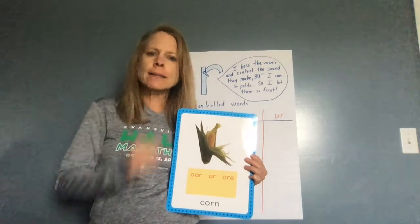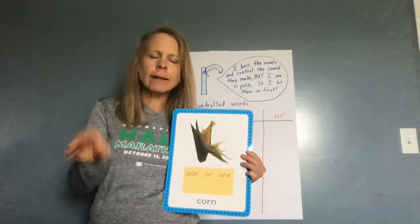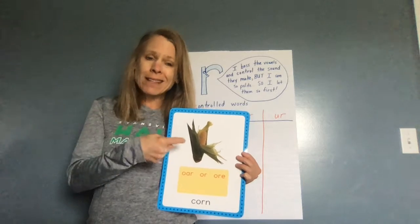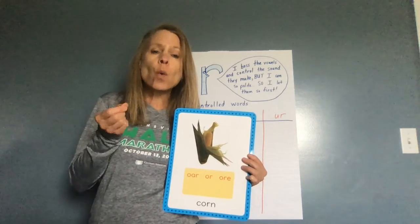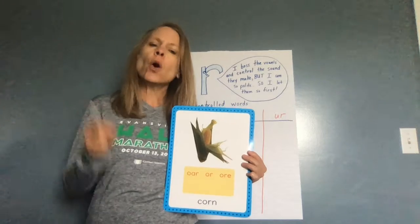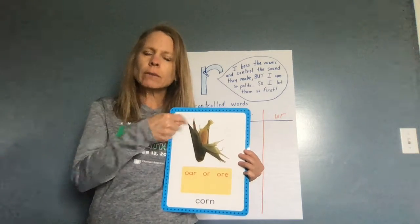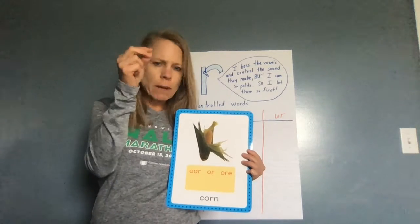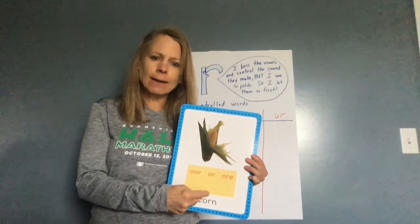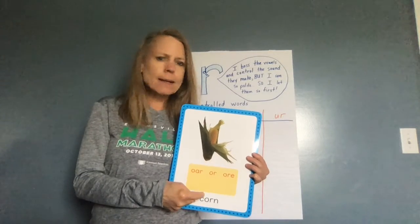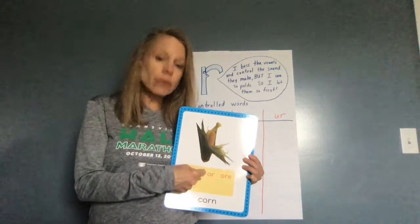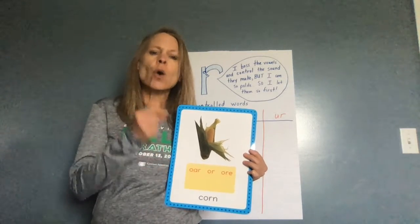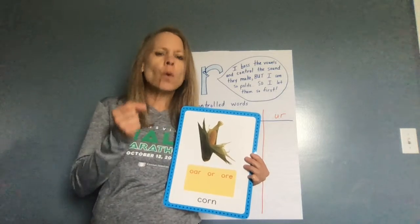That R is so bossy — no matter what vowel it's behind, it's still going to make it say a different sound. When O and R are together it's going to say 'or' like in corn. Say it with me: 'or' like in corn. So I know — look where's my vowel, is there an R right behind it? If there is, I know it's going to be bossy and make that vowel say something different. When O and R are together they are going to say 'or'. What are they going to say? Or.